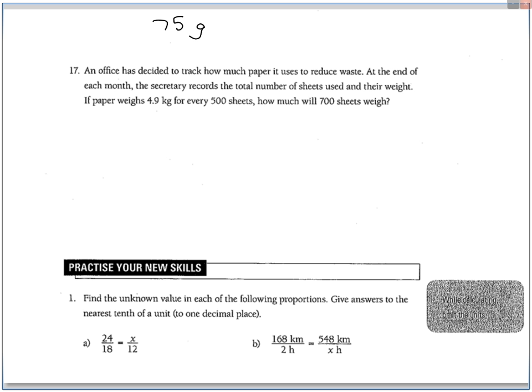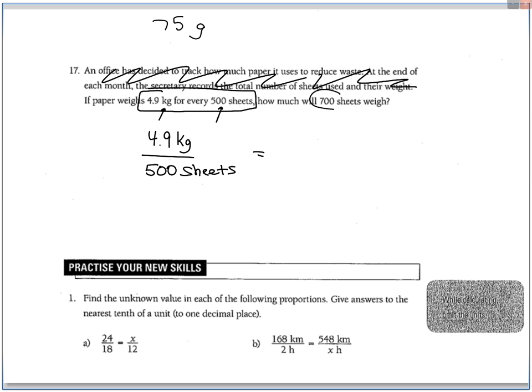An office has decided to track how much paper it uses to reduce waste. At the end of each month, the secretary records the total number of sheets used and their weight. If paper weighs 4.9 kilograms for every 500 sheets. So all I did, sort of just like skim this crap here, and then highlight what's important, write down the units especially, keep me organized. Then it says, how much will 700 sheets weigh? So now I know 700 has to be down here to stay organized. This will be x kilograms cross-multiplying, just like that.